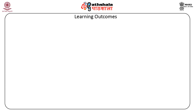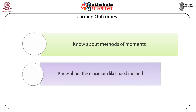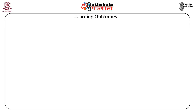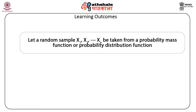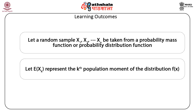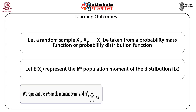After studying this module, you shall be able to know about the methods of moments and know about the maximum likelihood method. We shall first discuss the method of moments. Let a random sample x1, x2, ..., xn be taken from a probability mass function or probability distribution function. Let E(x^k) represent the kth population moment of the distribution f(x). We represent the kth sample moment by m'k, where m'k = (1/n) * summation from i=1 to n of x_i^k.